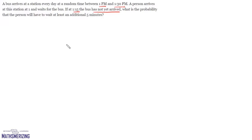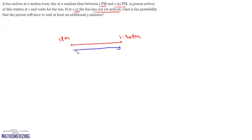This bus arrives at a station every day at a random time between 1 p.m. and 1:30 p.m. So the time of arrival for this bus is random and it is a continuous variable which lies between 1 p.m. and 1:30 p.m. We will consider this length as 30, taking 1 unit for each minute. All the points on this line correspond to any random time of arrival of this bus. So our entire sample space can be geometrically mapped with this line of length 30.